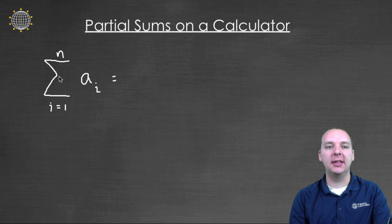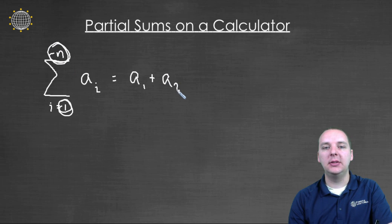As you know, a partial sum looks like this. If you have a summation from 1 to n of a sub i, then what you're doing is you're starting at a sub 1 and you're adding every term in the sequence until you get to this number. So you have a sub 1 plus a sub 2 plus a sub 3 plus dot dot dot until you get to a sub n.